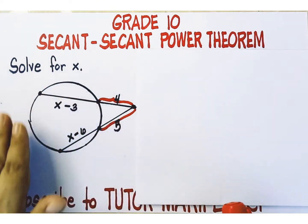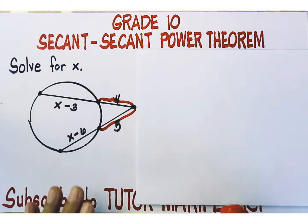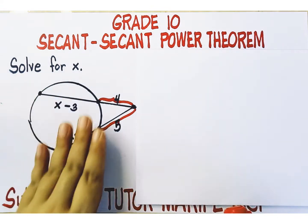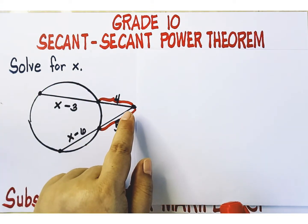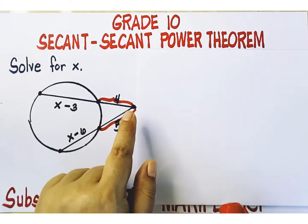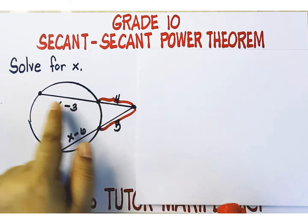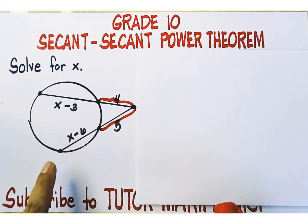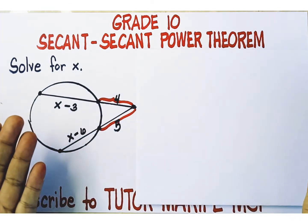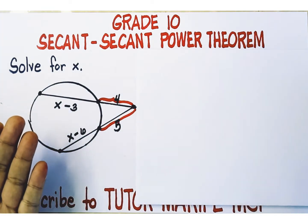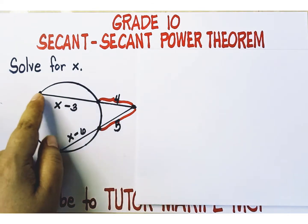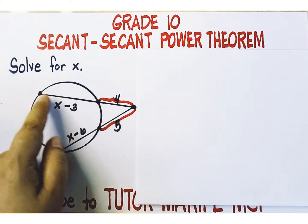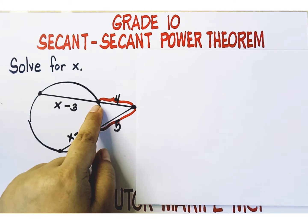This is the given figure. We have a circle and two secant segments drawn from an external point. A secant segment is a line segment intersecting the circle at exactly two points.